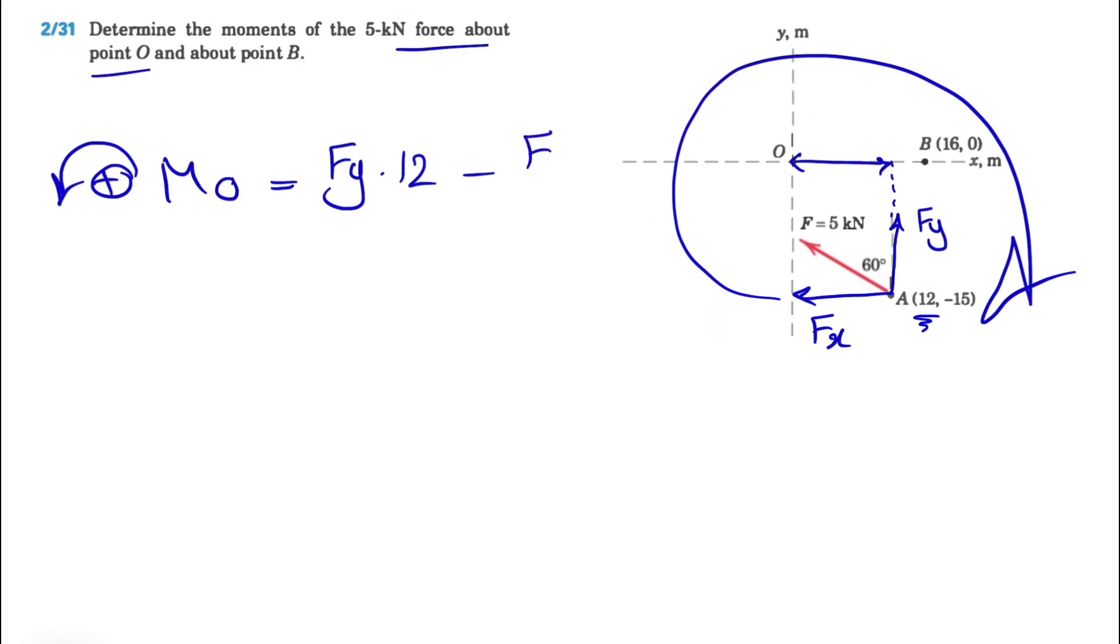Let's go for FX. FX, we can see that the moment is clockwise, so we have a negative sign. It will be FX times the distance from O to the line of action of FX, which is what we have in here. What's the distance from point O to this point, which we basically go 15 units or 15 meters in the Y axis? So we're just going to put 15.